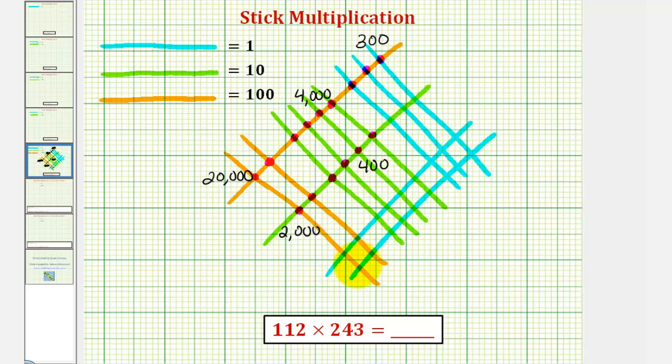Here we have more intersection points of an orange and a blue, which represent 100 times 1, or 100. So we have 100, 200, 300, 400.